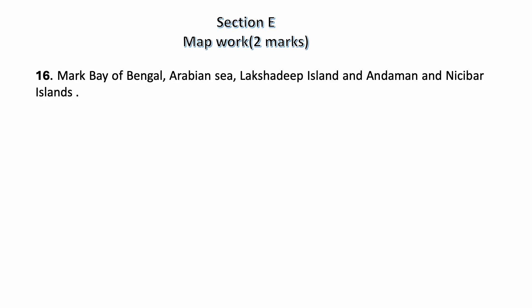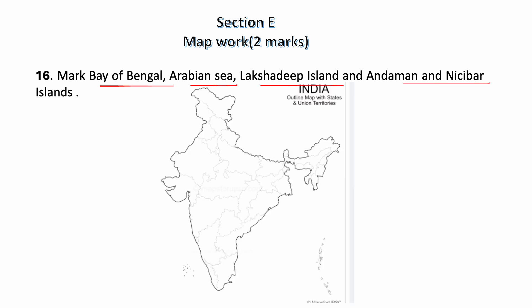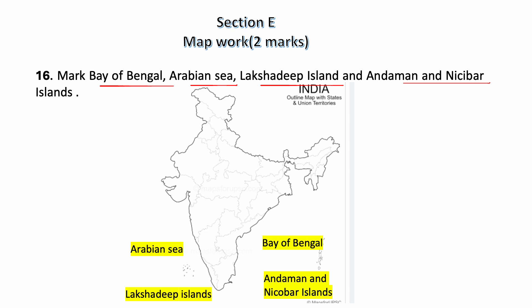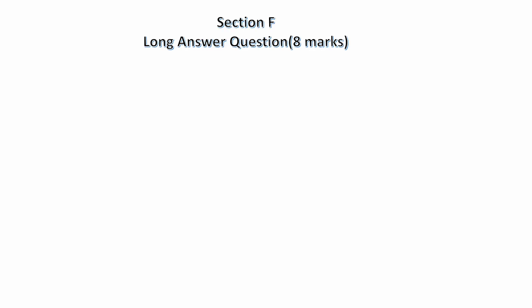Section E — map work, 2 marks. Mark Bay of Bengal, Arabian Sea, Lakshadweep Islands, and Andaman-Nicobar Islands. See this map — we can mark Arabian Sea here, Bay of Bengal here, Lakshadweep Islands, and Andaman-Nicobar Islands.